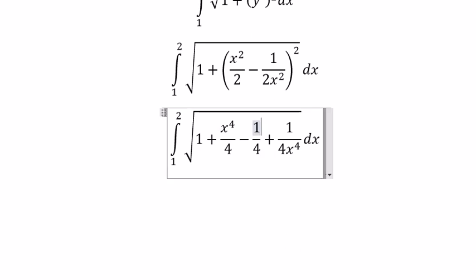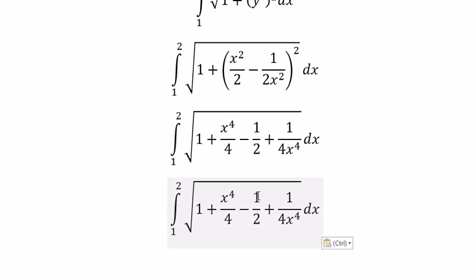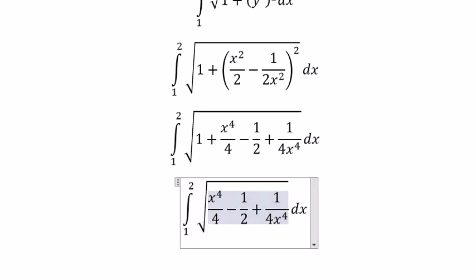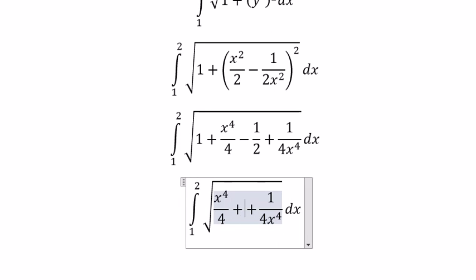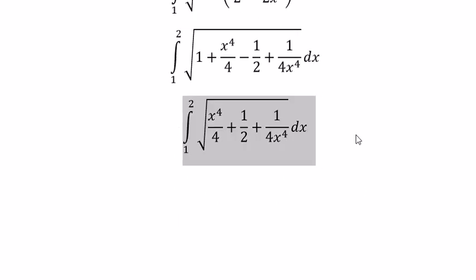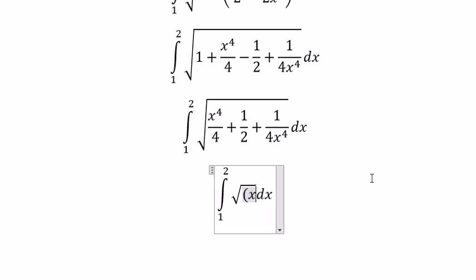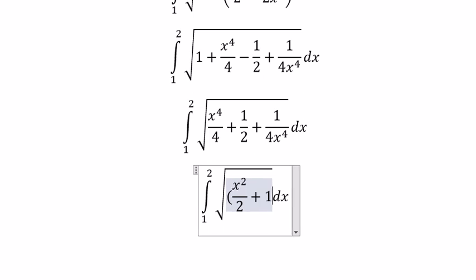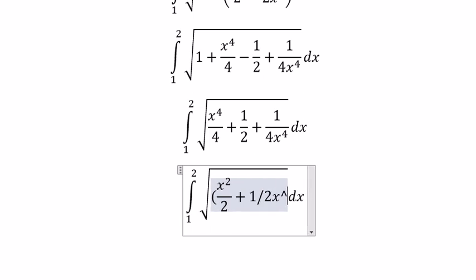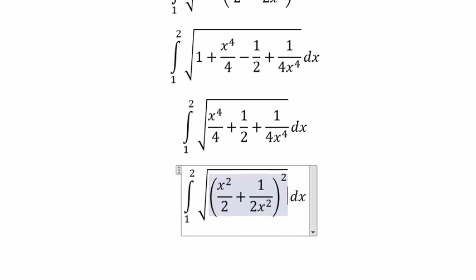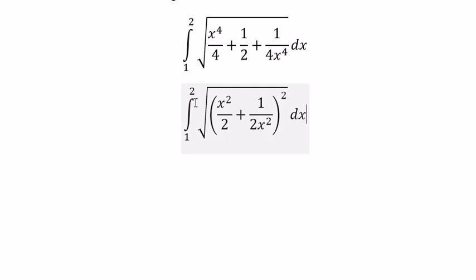We have this in here. So you get 1 over 2, 1 minus 1 over 2. You get 4x to the power of 2. And this one we can change to x squared over 2 plus 1 over 2x squared to the power of 2. Because 1 over 2 in the power of 2, everything in here in the power of 2.